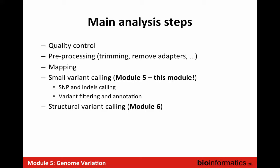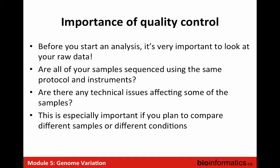With projects with many datasets, make sure the quality profile is similar across different individuals - otherwise you might end up with outliers that have lots of variants simply because there was a sequencing quality problem. Pre-processing includes trimming reads and removing adapters. Then comes the mapping step, and now we move to calling small variants - which we'll cover this session - and then calling larger variants after the coffee break.